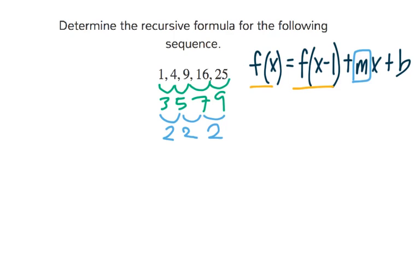We multiply it by the term number, and then we add a value b, which we need to find as well. So we know that m equals 2, so we'll plug that in.